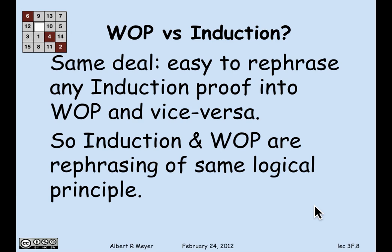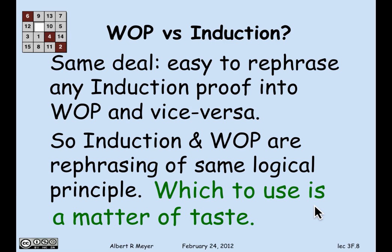Which brings us to the question of which one to use — and all I can say is that it's a matter of taste. When I'm writing up proofs, I'll often try different versions: I'll try it by ordinary induction and by well-ordering, read the two, decide which one seems to come out more cleanly, and go with that one. There isn't any simple rule about which to choose, but in a certain sense it really doesn't matter — just pick one.